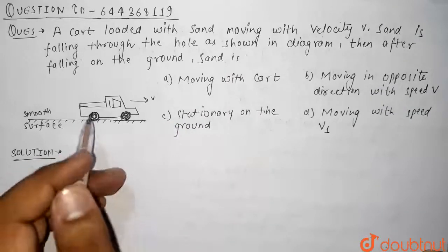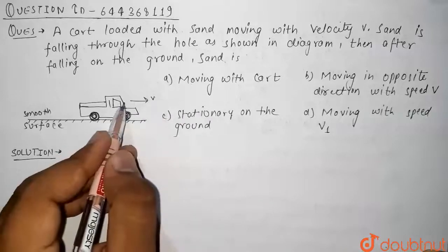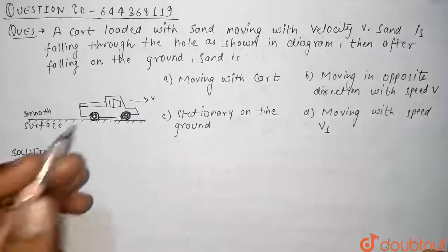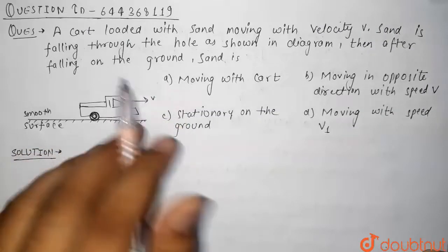Now in this question we have been given a cart which is loaded with sand and it is moving with speed v1 in the right direction, and we have to tell what is the velocity or what is the condition of the sand after falling on the ground.